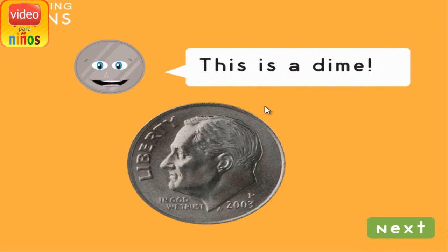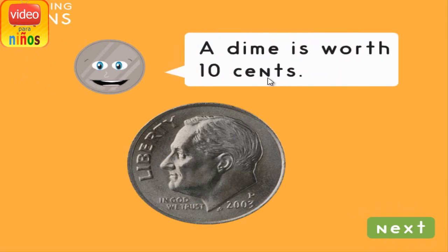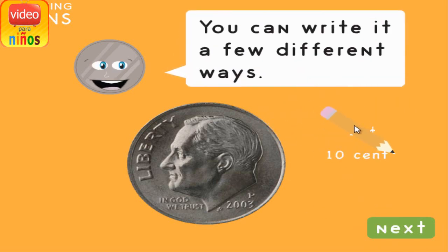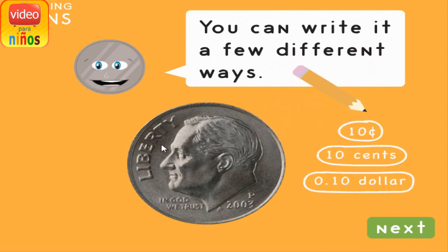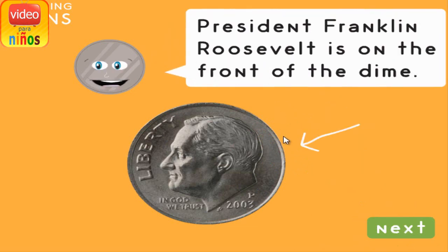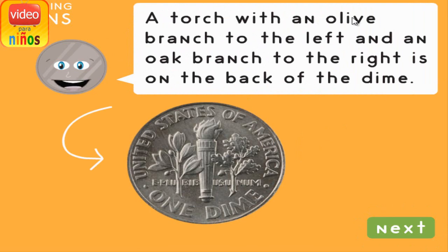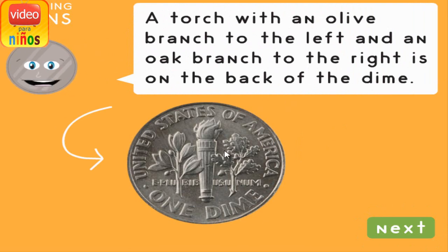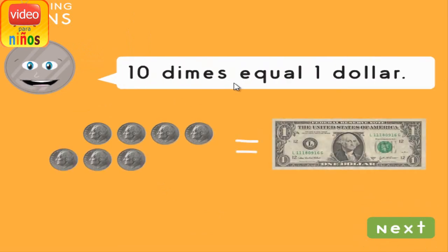This is a dime. A dime is worth ten cents. You can write it a few different ways. President Franklin Roosevelt is on the front of the dime. A torch with an olive branch to the left and an oak branch to the right is on the back of the dime. Ten dimes equal one dollar.